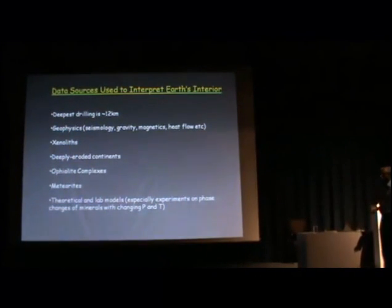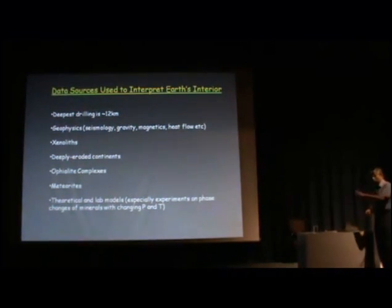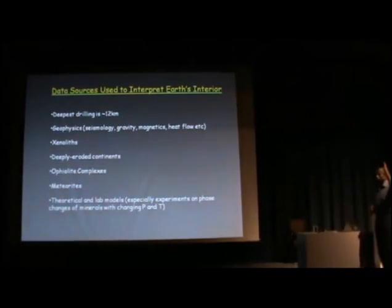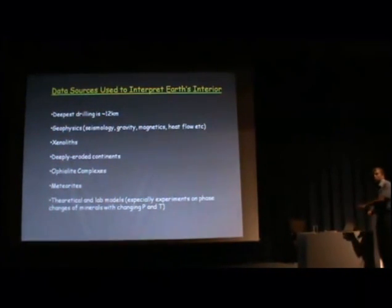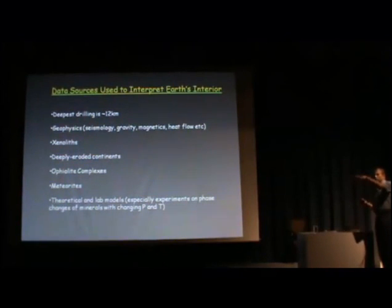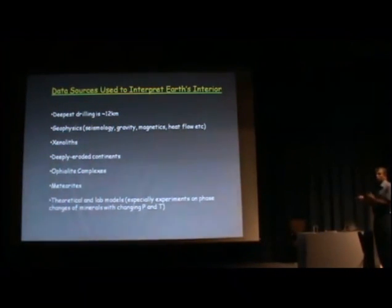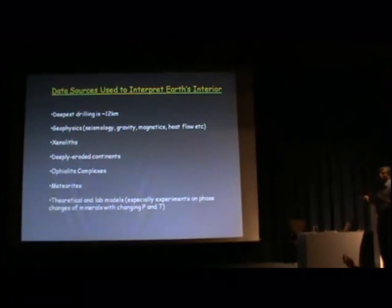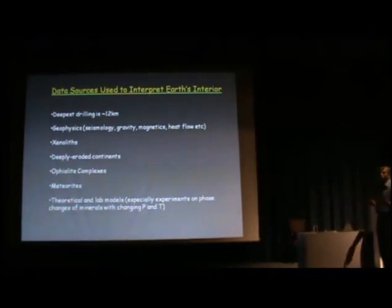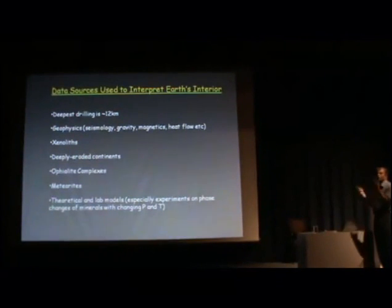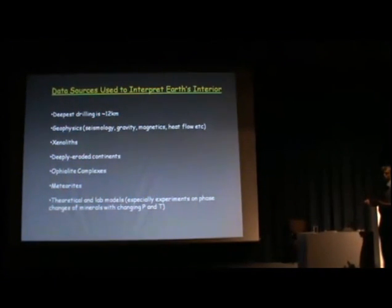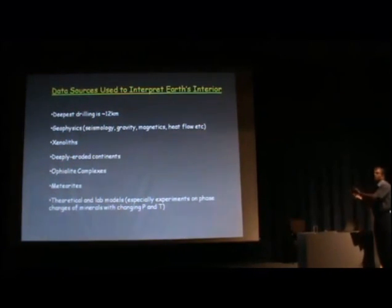Sometime in the geological past, when there was a mountain there, that mountain is completely removed, and what we are seeing now is the floor on which the mountain was resting - that floor is now exposed. If you go to the Karnataka region, you find there are very few mountains. What you are looking at is the oldest material available, on which the mountains were sitting. They have been removed, and therefore the deeper portion is exposed. So I get to understand about the composition of that deep crust.